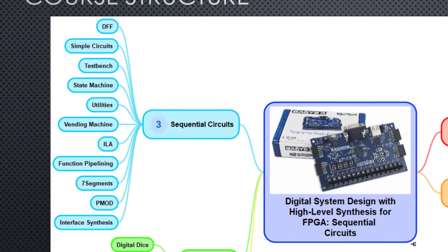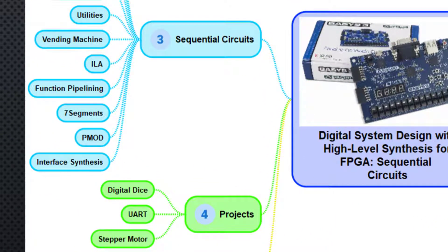The third part explains how to develop sequential circuits using C/C++ language in HLS. This part consists of 11 sections and 77 lectures. Finally, the last part puts all explained techniques together to implement three exciting projects. It consists of three sections and 18 lectures.